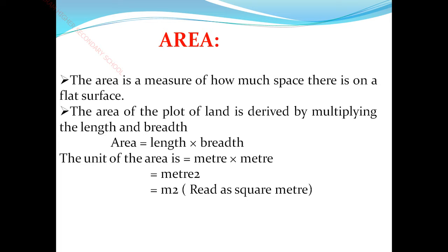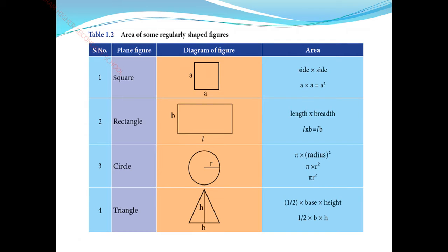Next, we have two types of shaped figures: one is regular shaped figures, and another is irregular shaped figures. Regular shaped figures are also known as 2D objects or two-dimensional figures. Here 'D' stands for dimension. Two-dimensional figures have two dimensions, and we calculate their area.